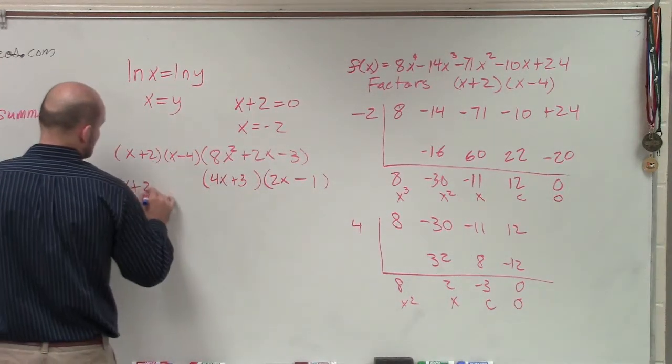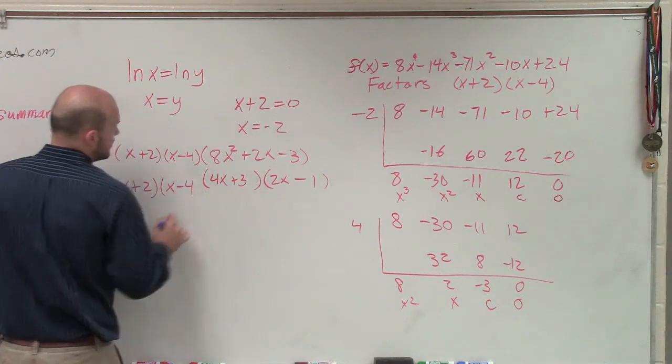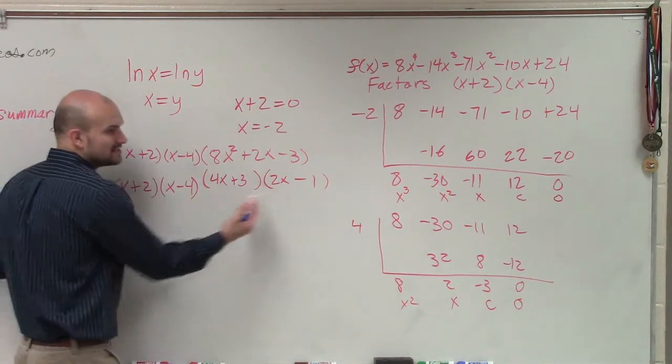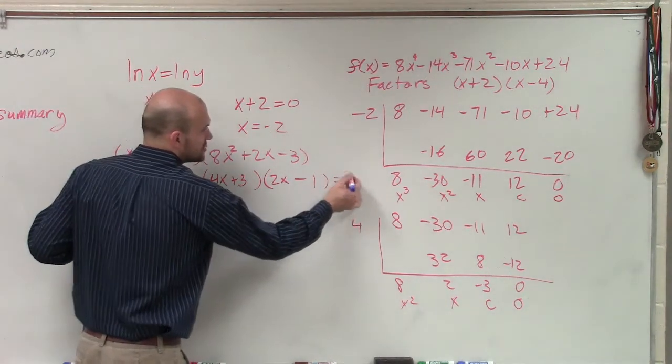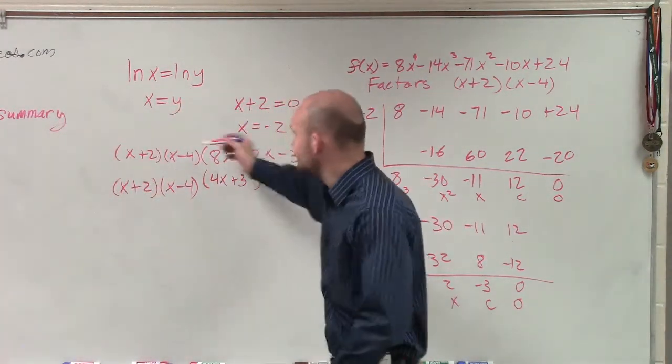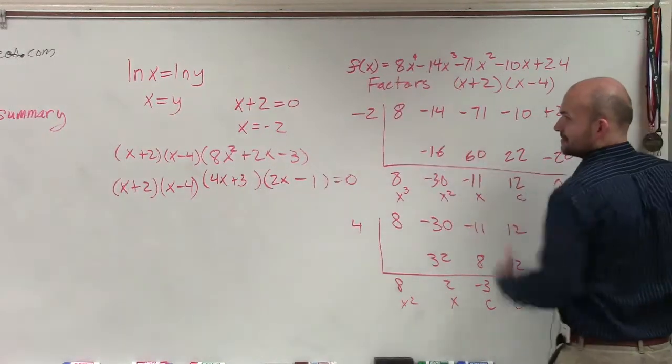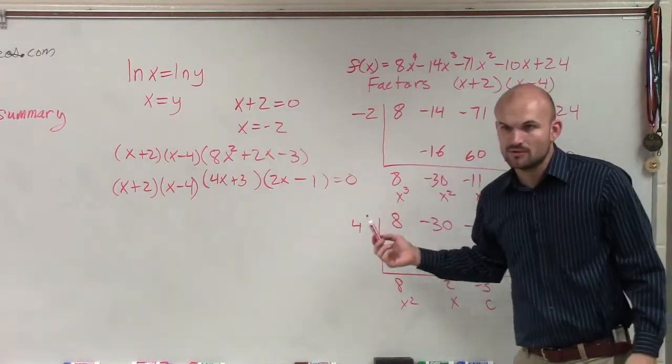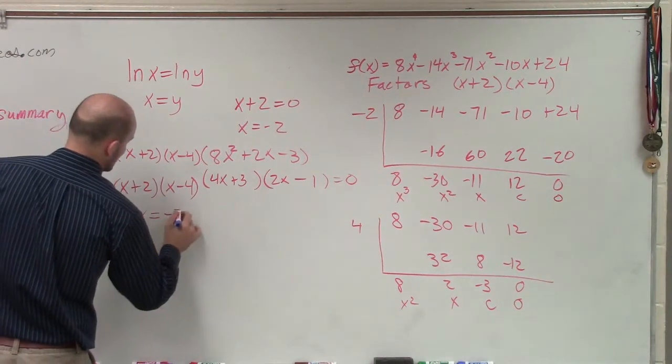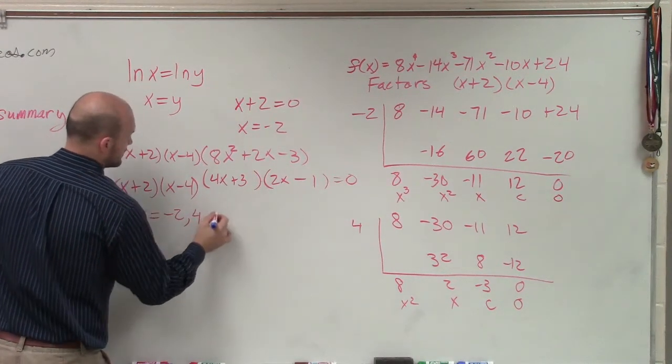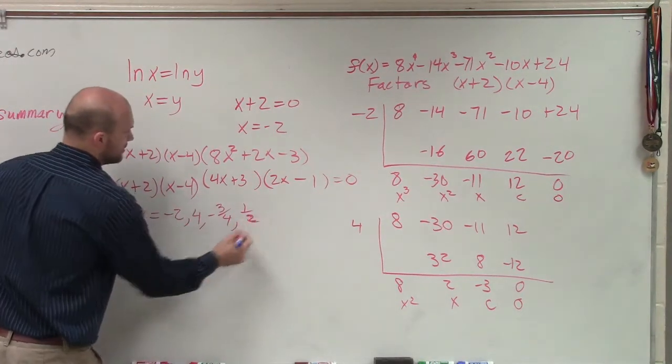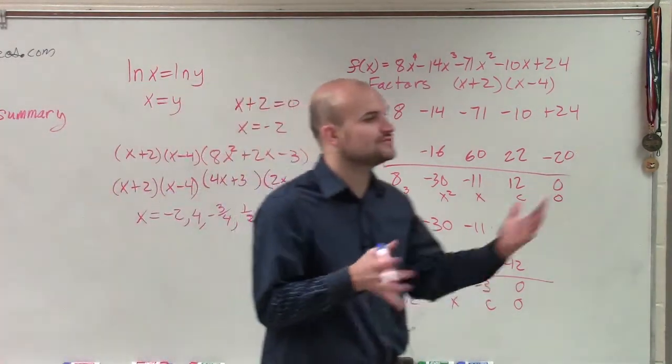So therefore, it says find the remaining zeros. Well now, ladies and gentlemen, you can see I've now written these as a product of linear factors. So to find the zeros, you could set all those factors equal to 0, because this times this times this times this equals that. And if you set them equal to 0, now you can find all the remaining zeros. So you could say x equals negative 2, 4, negative 3/4, and positive 1/2 by applying the zero product property setting each one of those equal to 0.